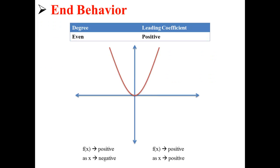If your function has an even degree and a positive leading coefficient, then as x approaches negative infinity, f of x approaches positive infinity. And as x approaches positive infinity, f of x approaches positive infinity, as shown in the parabola above.